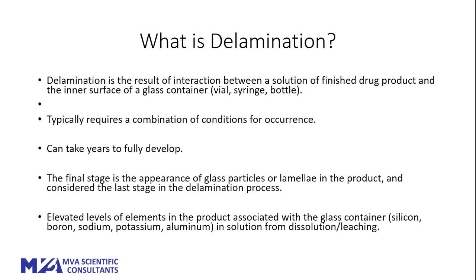Delamination is often not seen until a product is well into the development stage or beyond. The final stage is the presence of glass particulate in the product. Another useful measure is the amount of elements associated with glass containers — measuring their levels in the product gives a sense of how much glass has made its way into the product and off of the container.